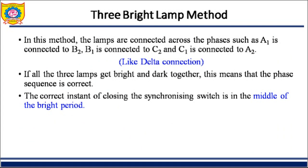Again, this involves three phases since it is a three-phase alternator. Here we are going to make changes into the connections. Previously, the lamp was connected between corresponding phases — for phase A the lamp terminals were only on phase A, for the second only on phase B, and for the third only on phase C. So each phase carried one lamp.